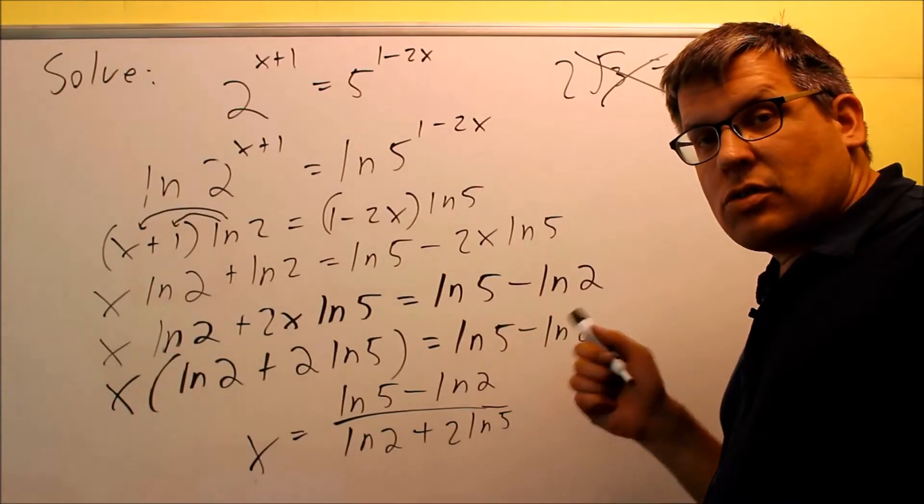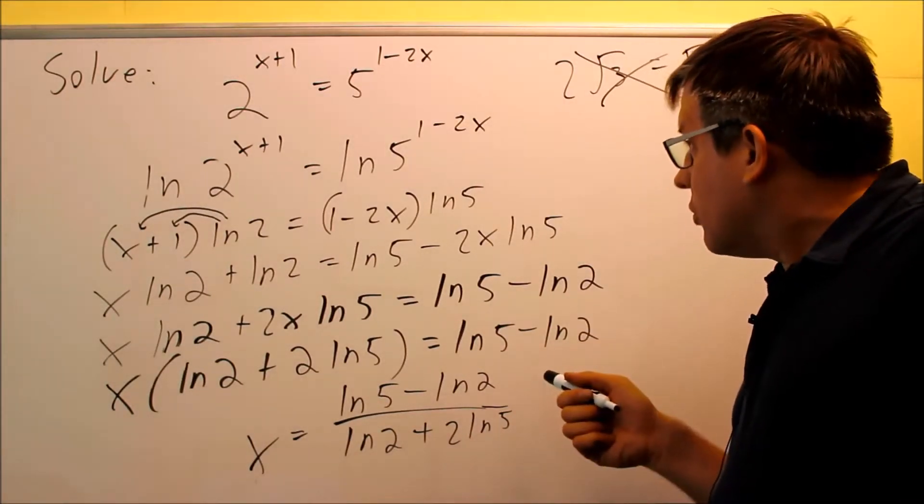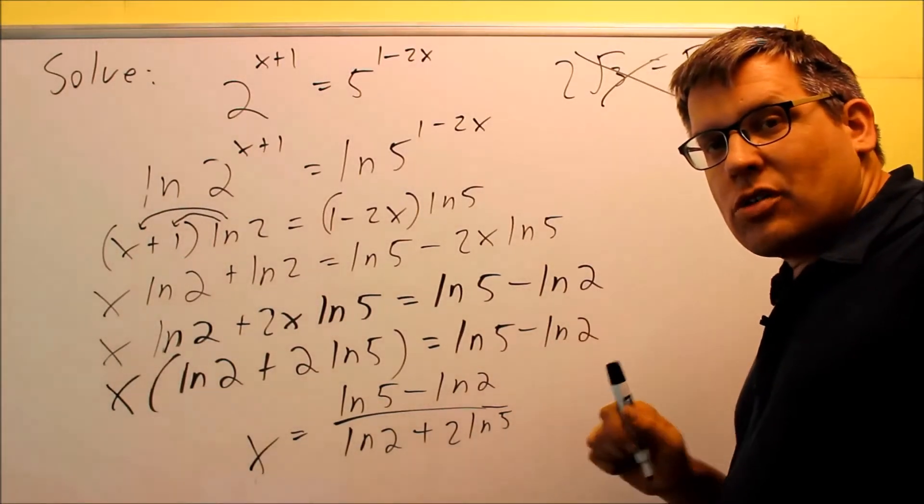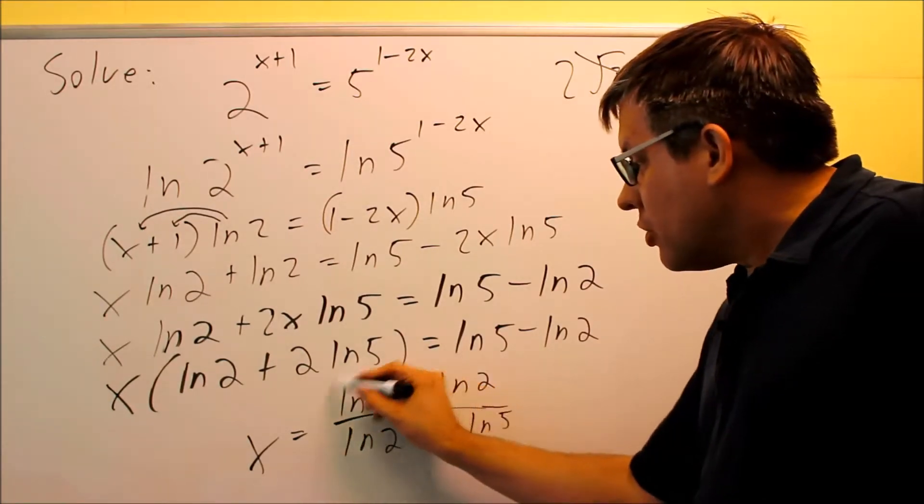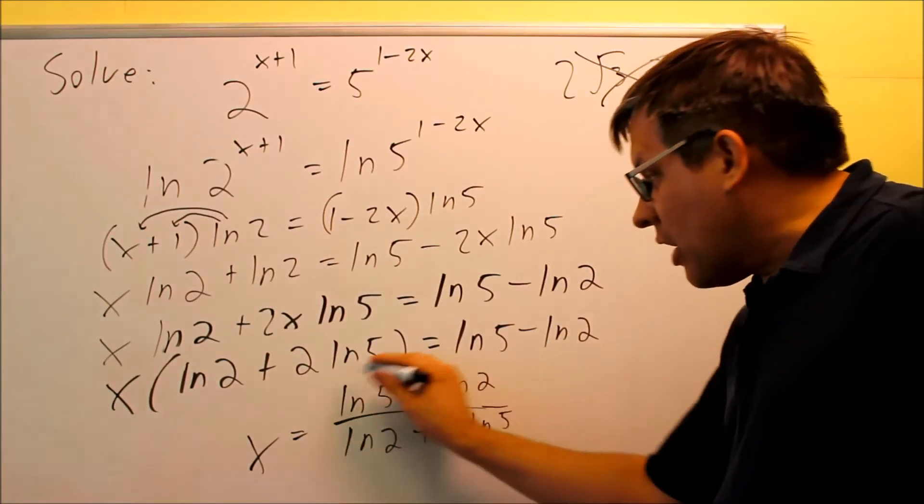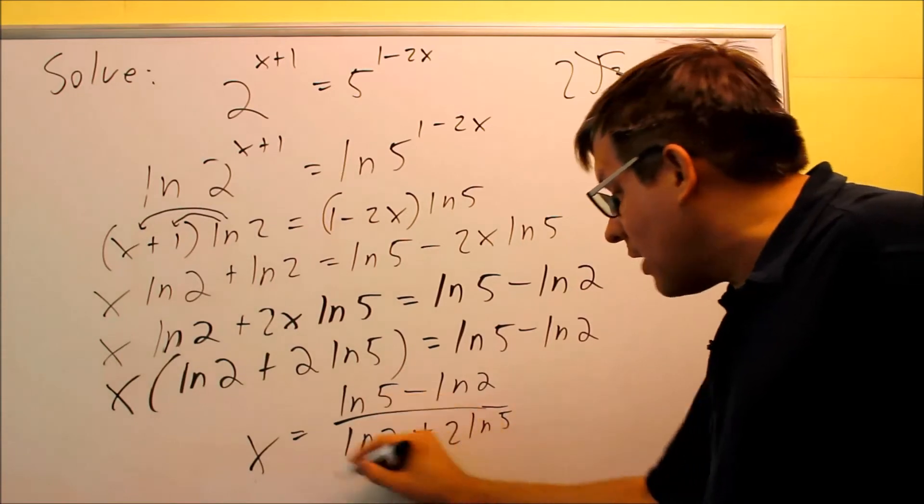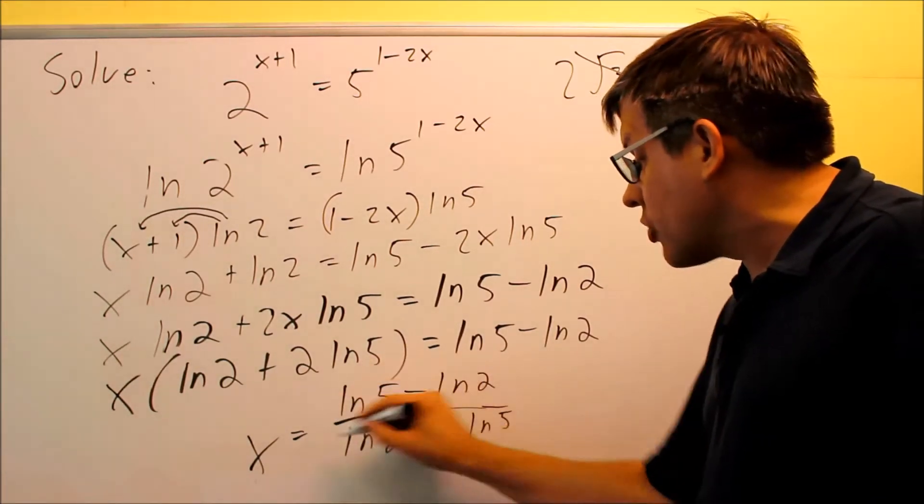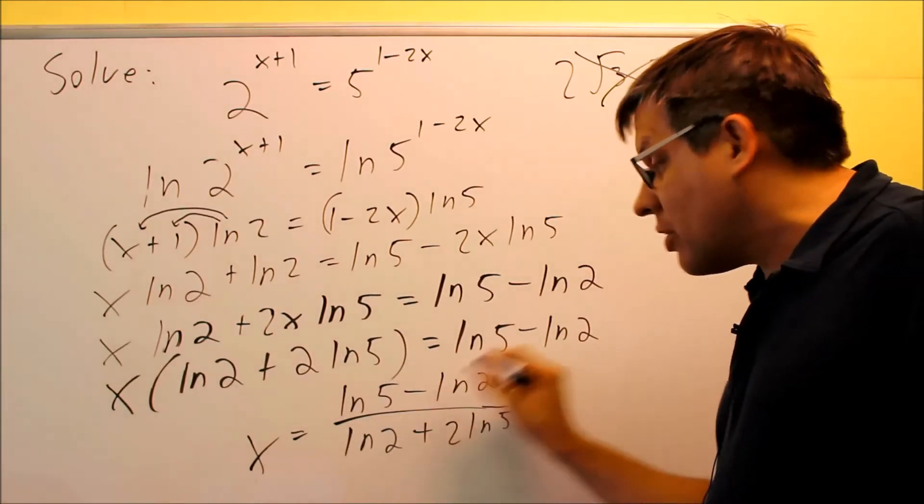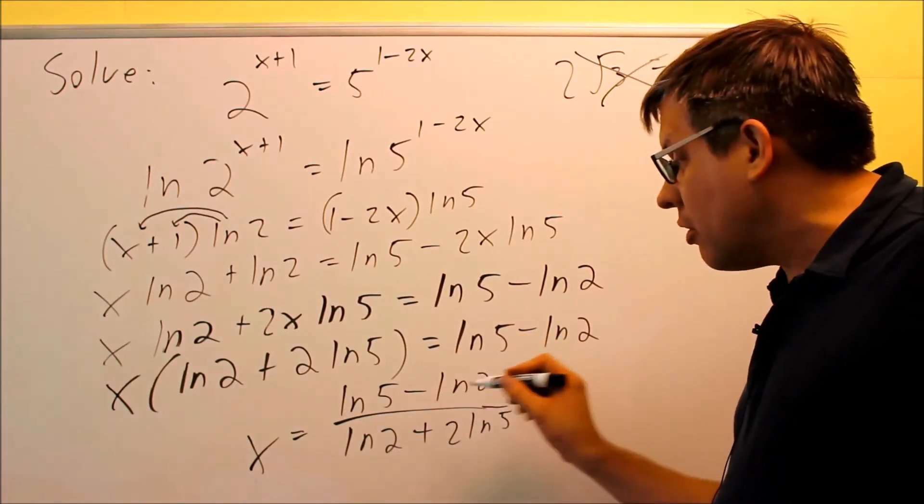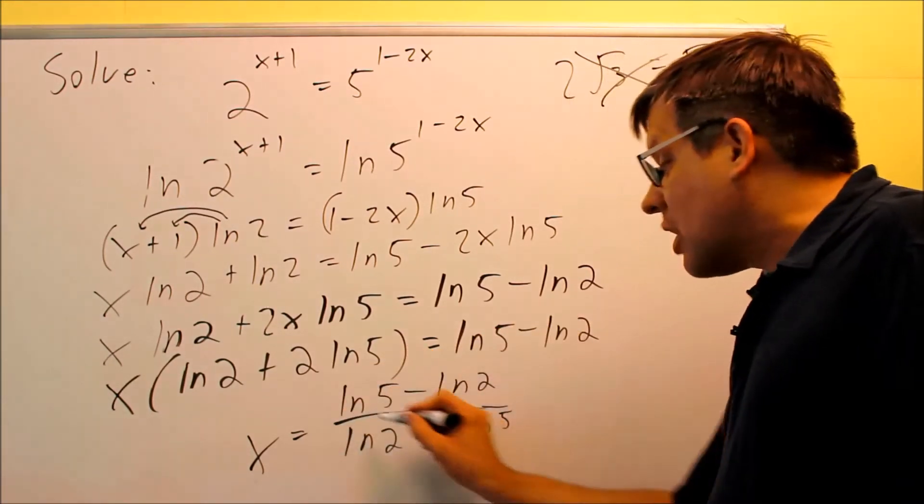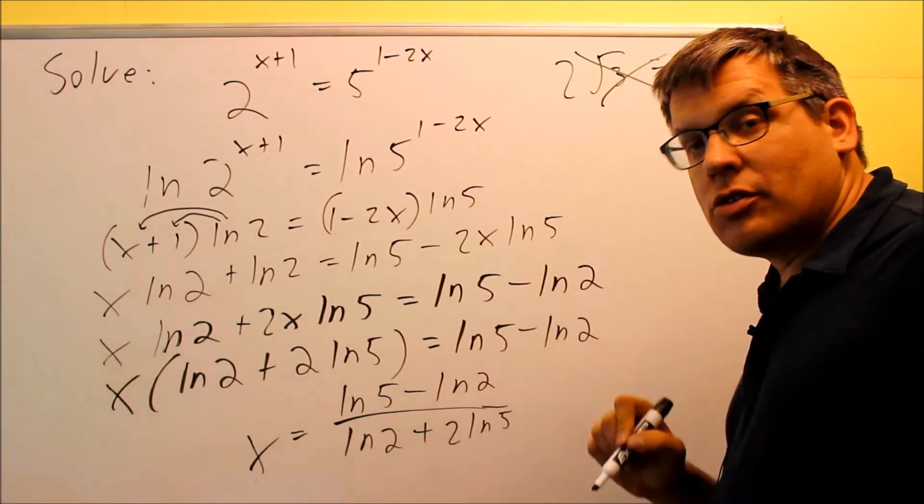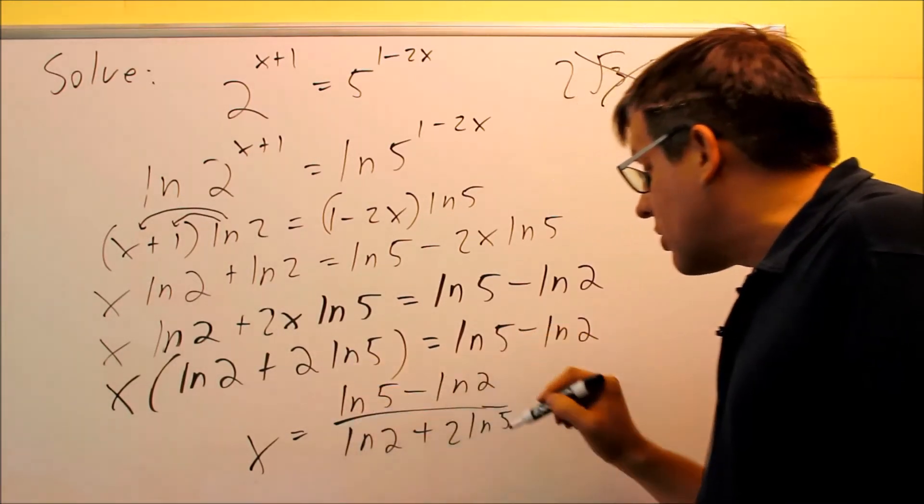Be careful when you're doing that though. When you're putting it into a calculator, make sure you put parentheses around the entire top and the entire bottom. The reason why is because if you don't put those parentheses, the calculator is going to divide the wrong thing. You want to make sure it knows to divide everything on top by everything on the bottom.